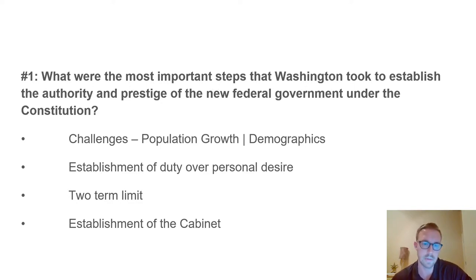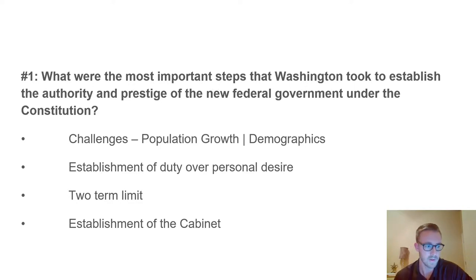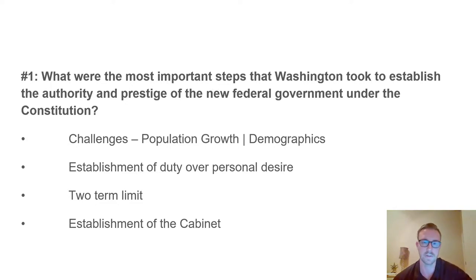Washington decided to establish a cabinet, determining that he needed multiple people to help him carry out the functions of the presidency. Some key figures: the Secretary of State would be Thomas Jefferson. The Secretary of State functions as the top position, covering the functions of the office when the president is absent, representing the president overseas, and overseeing the executive branch.